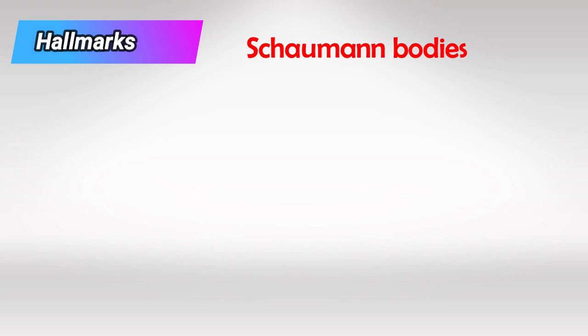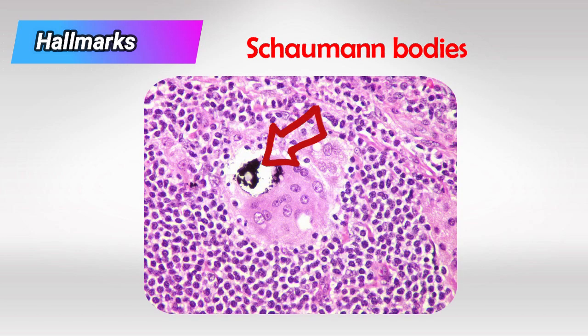And finally we have Schaumann's bodies, which are intracytoplasmic calcifications. Of course, calcifications appear black or dark brown in H&E stain.